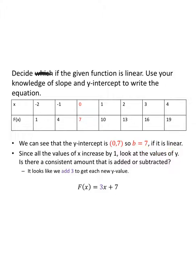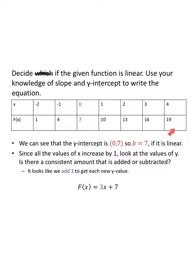Taking the easy part out of the way, let's look at the pattern. Since the x values all increase by one, we look at the y values: is there a consistent amount added or subtracted? To get from one to four we add three, add three to get seven, add three to get ten — we add three each time. So the slope m is positive three, giving F of x equals three x plus seven. There is a consistent change in y for a consistent change in x, so this is a linear function.